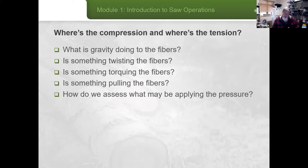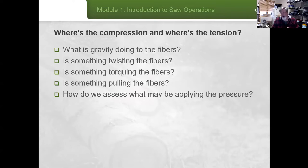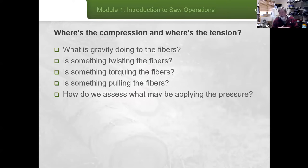Is there anything torquing the fibers — something causing fibers that would normally run straight to be under pressure? And sometimes overlooked: is anything actually pulling at the fibers? Best example: gravity working on one end with the crown suspended in one direction, but still attached to the root ball. That root ball may be wanting to settle back in, further stretching the fibers on top. There may be incredible tension on top of the log as a result.